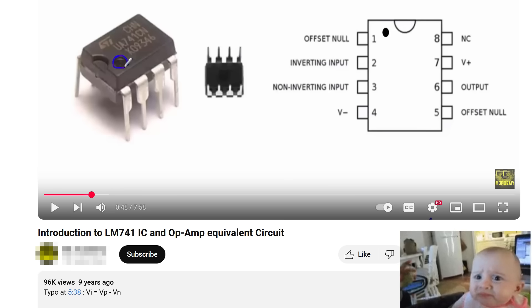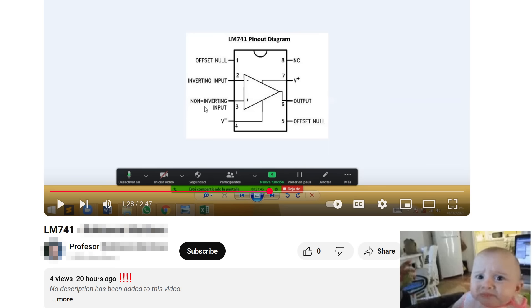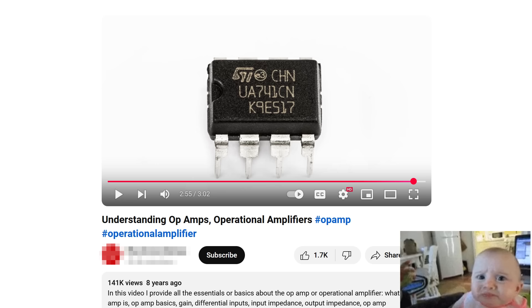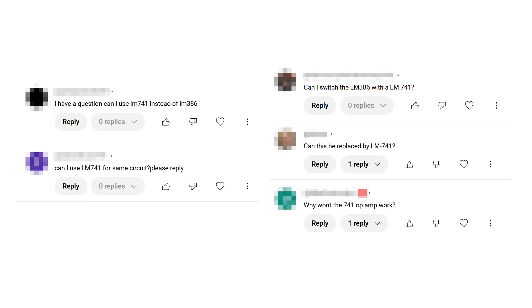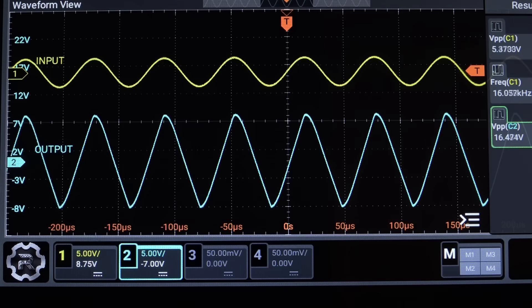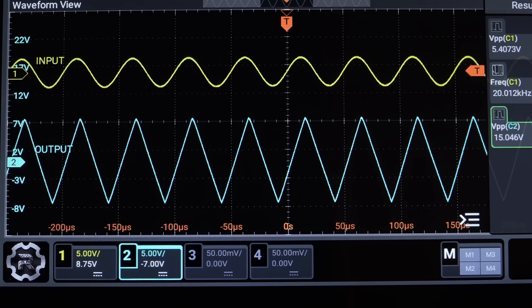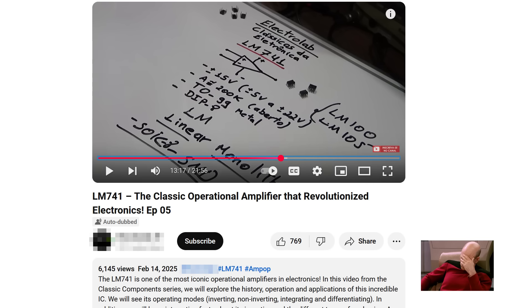But there are way, way too many people out there on YouTube and in real life who are introducing the 741 to students like it's the default op-amp you should know about, and it isn't. It just confuses the hell out of students, and then they come to me asking why things aren't working. The 741 is a great tool for teaching the non-idealities of op-amps, but half the lectures I see using it are not teaching the non-idealities of op-amps.